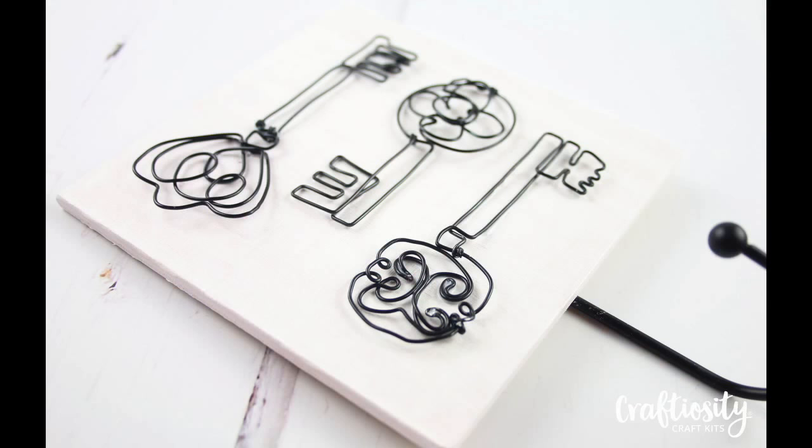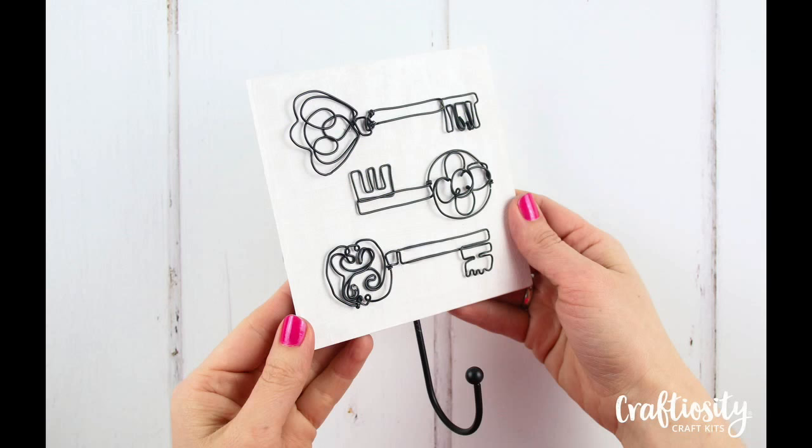Hello and welcome to Craftiosity, the subscription box of modern craft kits. This month we're working with the fantastic wire work artist Helena Sharpley. Using Helena's designs you'll be sculpting three keys with her template to guide you every step of the way, and then mounting onto a board with a hook on it so you can pop your keys onto that. I hope you enjoy the tutorial.